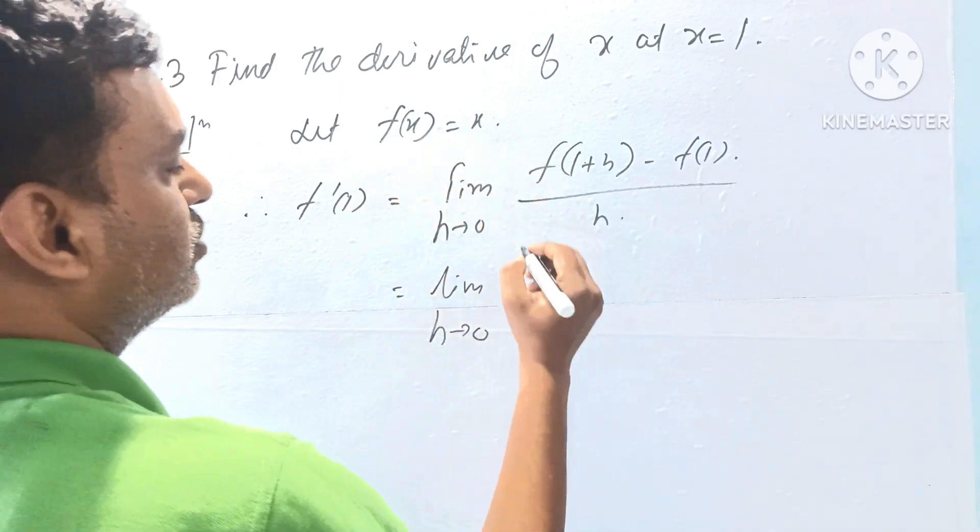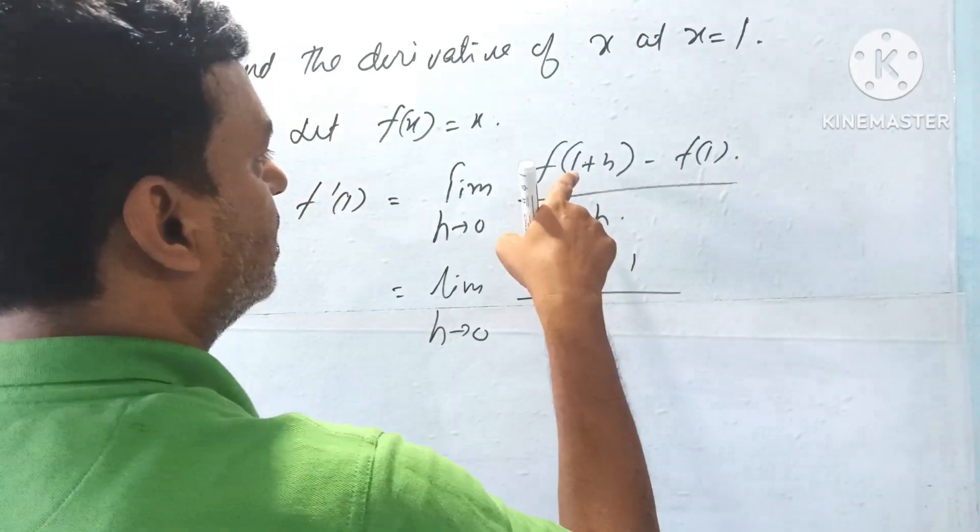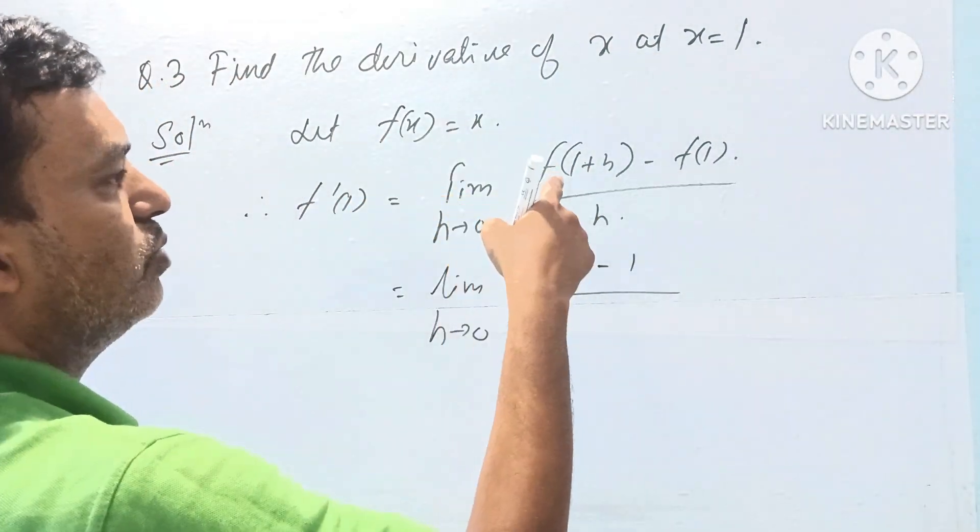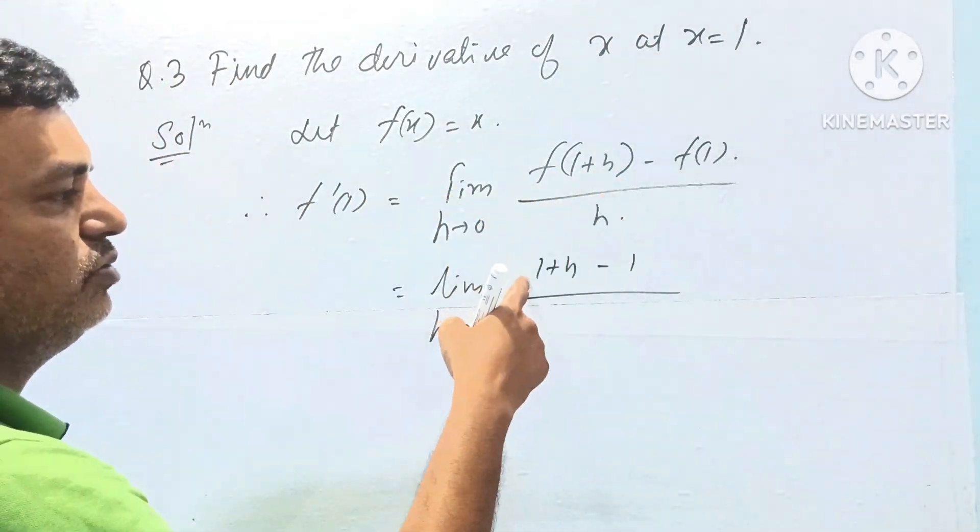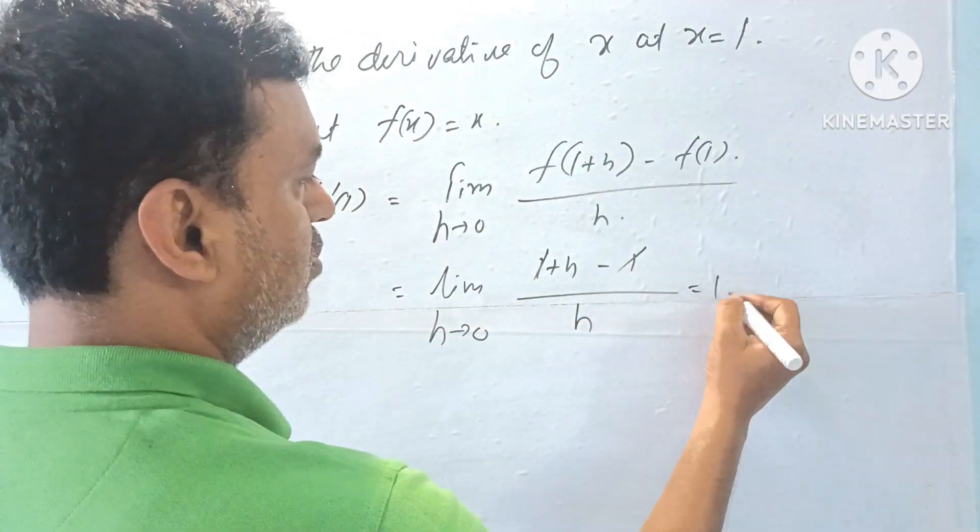f of 1 plus h is 1 plus h, and f of 1 is 1. So we have 1 plus h minus 1 by h, which equals 1.